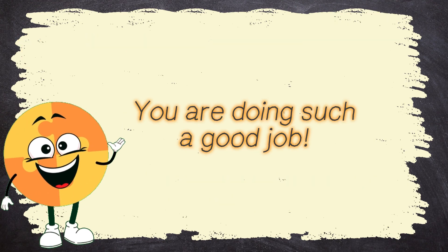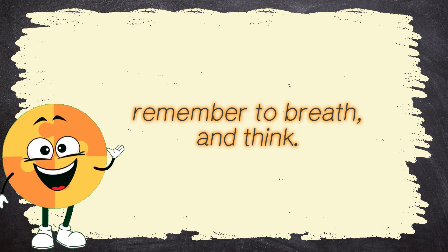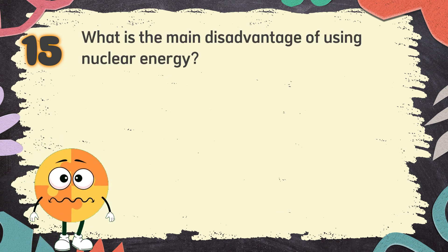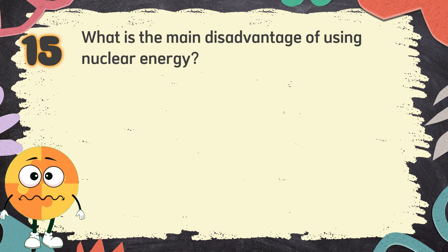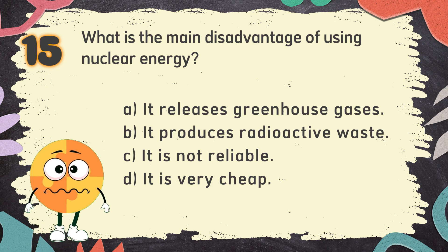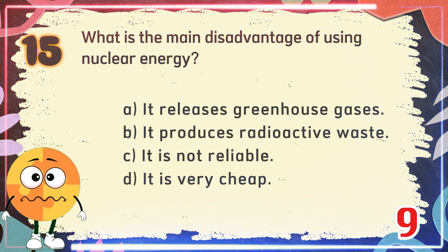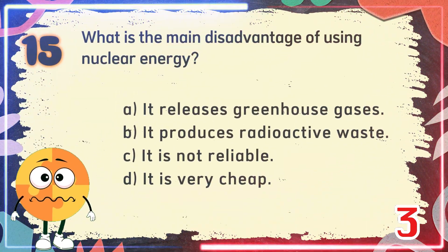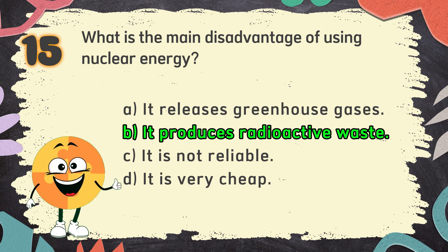You are doing such a good job! The last few questions are coming up — remember to breathe and think! You can do it! Number 15: What is the main disadvantage of using nuclear energy? The choices are: A. It releases greenhouse gases, B. It produces radioactive waste, C. It is not reliable, D. It is very cheap. The correct answer is B. It produces radioactive waste.